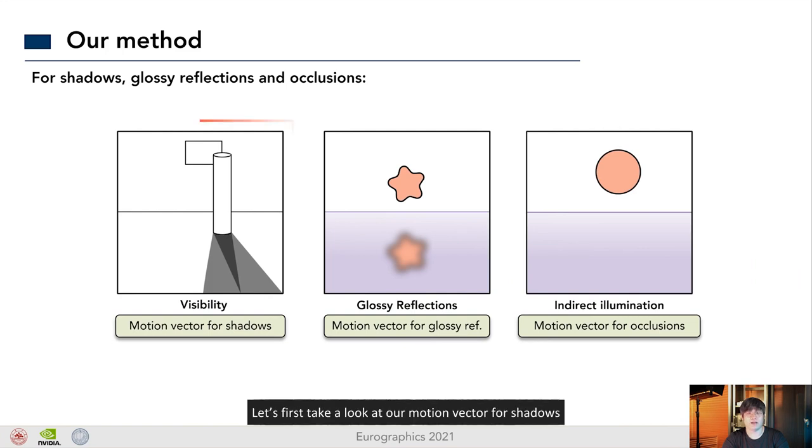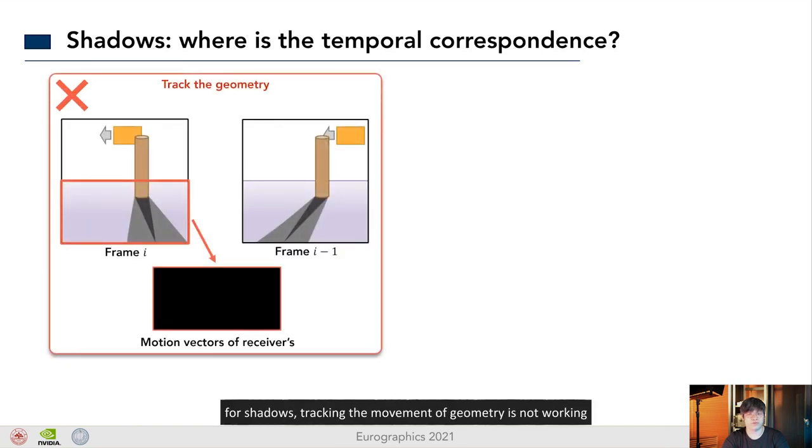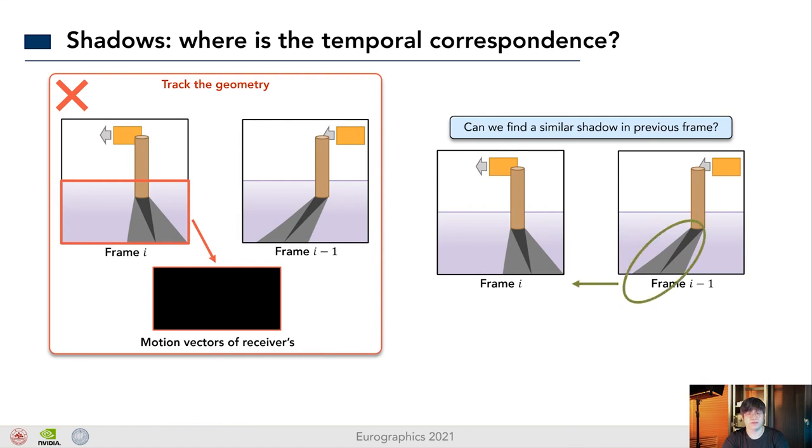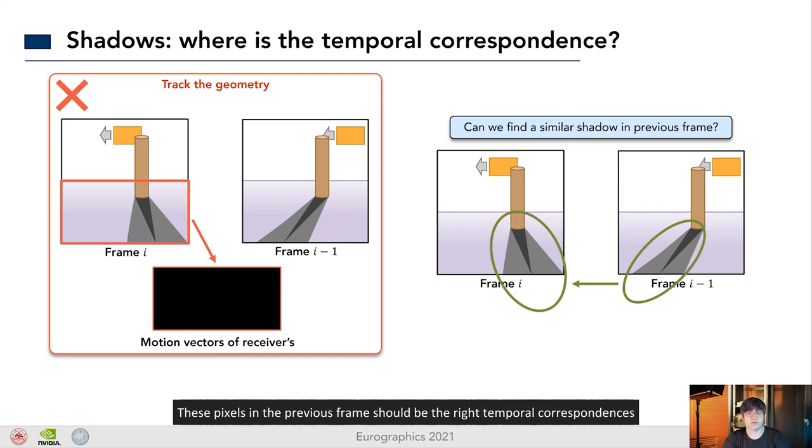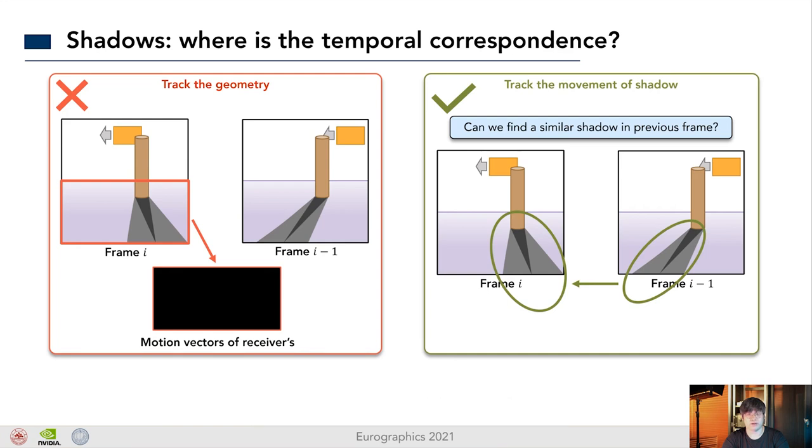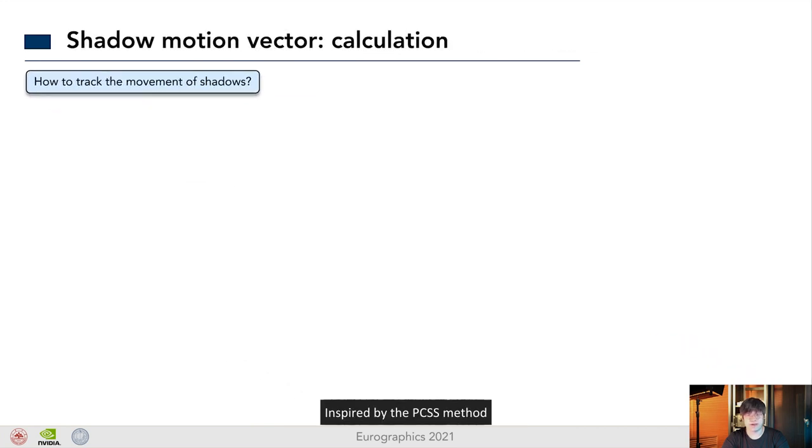Let's first take a look at our motion vector for shadows. Remember that all we want to do is to find the right temporal correspondence for a pixel in current frame. We already know that for shadows, tracking the movement of geometry is not working. Our key observation is, can we find a similar shadow in the previous frame? The answer is yes. These pixels in the previous frame should be the right temporal correspondence. So, our insight is, for shadows, it is not the geometry we want to track, but the movement of shadows. Now, the question is, how to track the movement of shadows?